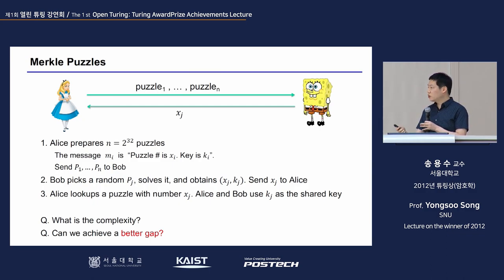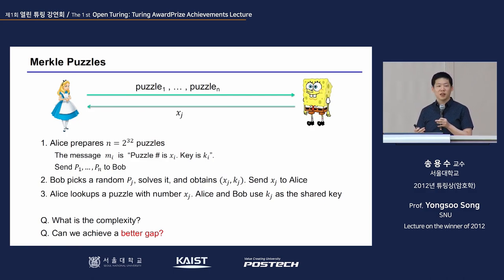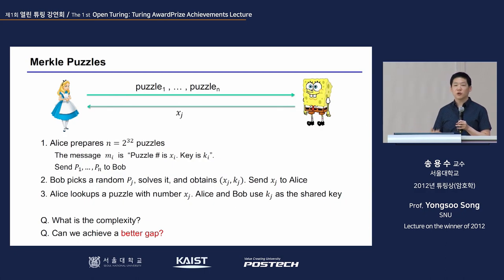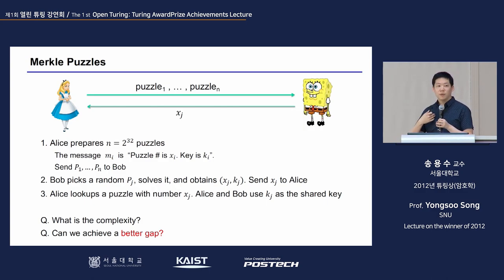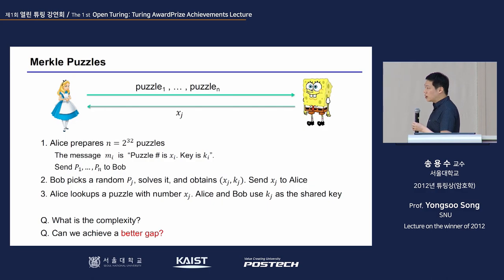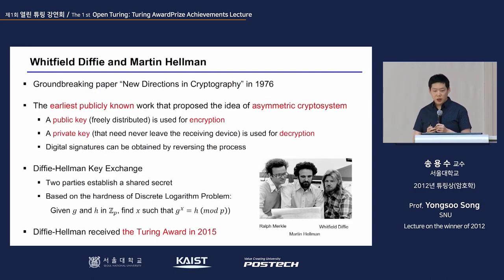There is a complexity gap between the communicating parties and an eavesdropper. If I give a hundred puzzles, an attacker needs to solve all of them, making it very complex — creating that complexity gap. The question is how to create a better, bigger gap so that other people cannot easily solve the puzzle. Merkle wanted to make a scheme where the gap is much larger.